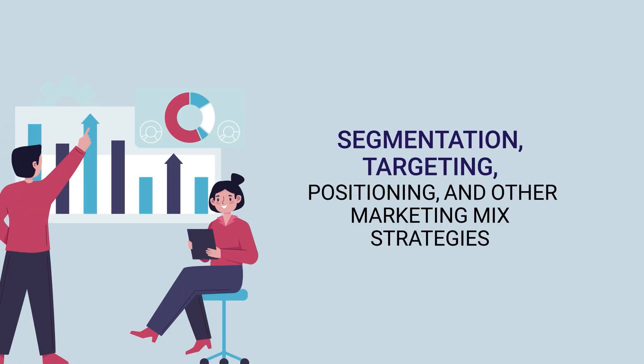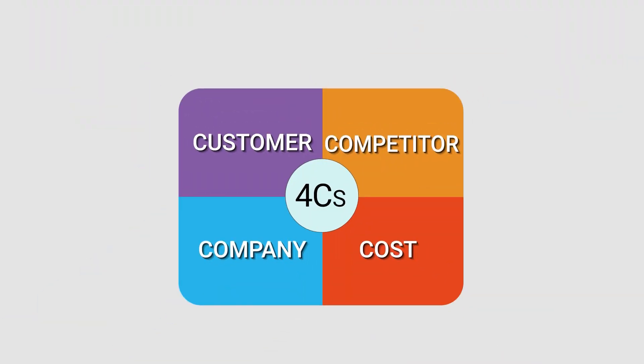Problem solving research is done to find a solution. Findings from this research are then used in making decisions related to specific marketing problems such as segmentation, targeting, positioning and other marketing mix strategies. We have also discussed that marketing information revolves around the four Cs: customer, competitor, company and cost.